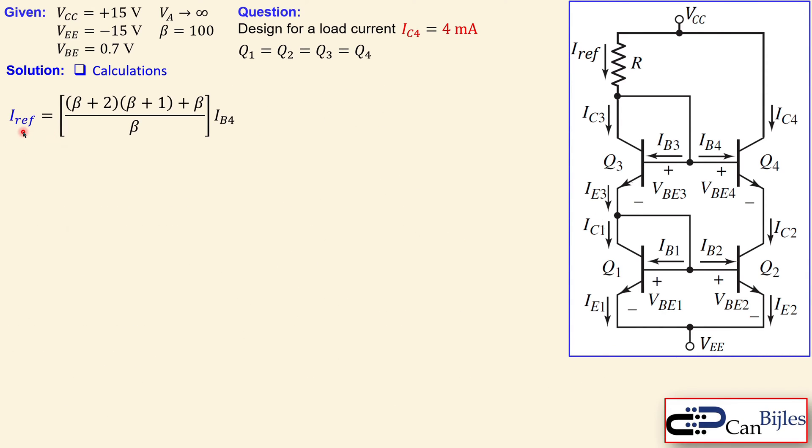This is the Iref expression in terms of β and IB4. We are really close because we'd like to have a relationship between the reference current and the load current IC4. We can rewrite this by working out the parentheses: β times β, two times β, then two times one, and then plus β. Further simplification gives β² + 4β + 2 over β times IB4.